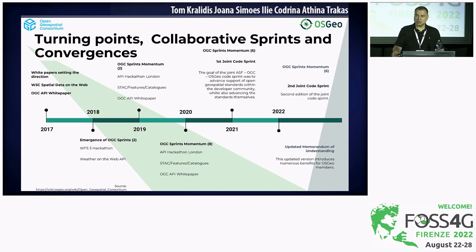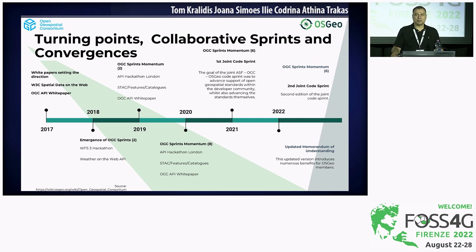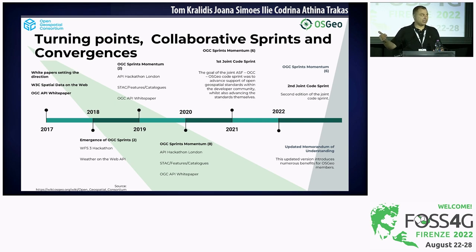Turning points. Over time we reflected on new opportunities. In 2017, a number of white papers set a new direction — a clean break toward modernized standards reflecting how IT and information management works today and addressing the mass market. This included the W3C Spatial Data on the Web best practices, a key cornerstone document, and the OGC API white paper in 2017, which called for a modernization of how our web services worked.